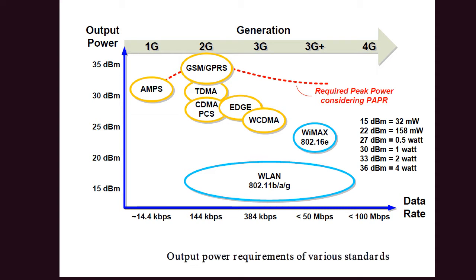The reason the output power lies in this range is, first, the device has to communicate with a base station, so it needs a significant amount of power. The second most important reason is that since the device is a handheld device, it has limited battery power — it's not possible to transmit at 40 dBm, as it would drain the battery and also violate the spectral mask. So for these constraints, output power happens to lie in this region.